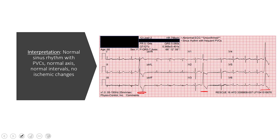It happens before your next anticipated beat, so it's premature. It's wide. There's no P wave. And the morphology doesn't have any concordant changes — part of the vector is up, part of the vector is down. That's good. So that's how we define our PVCs.